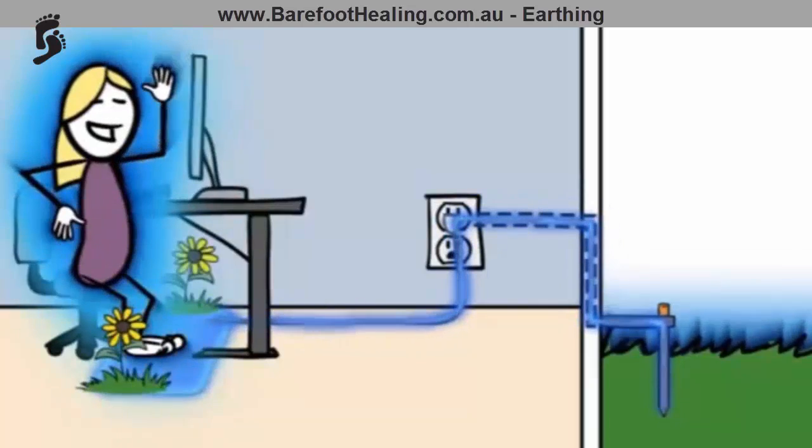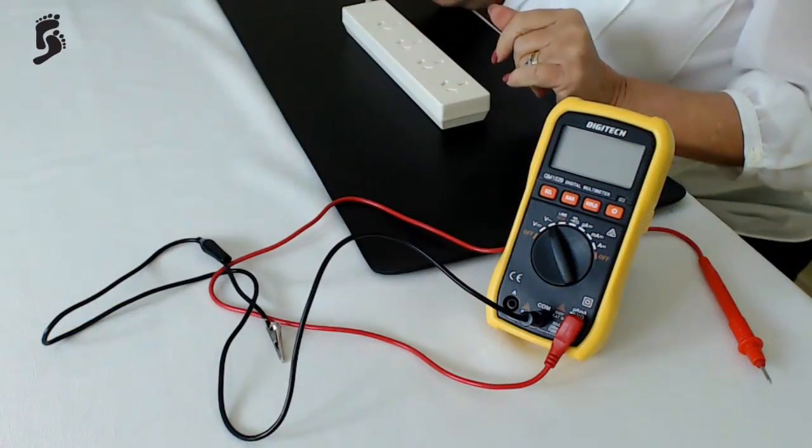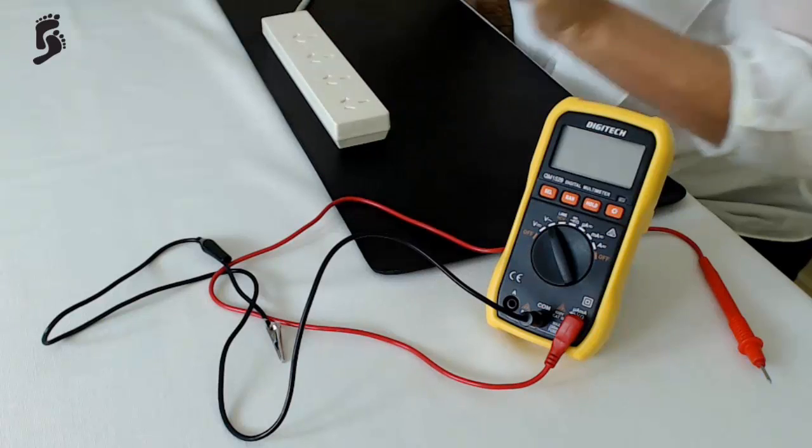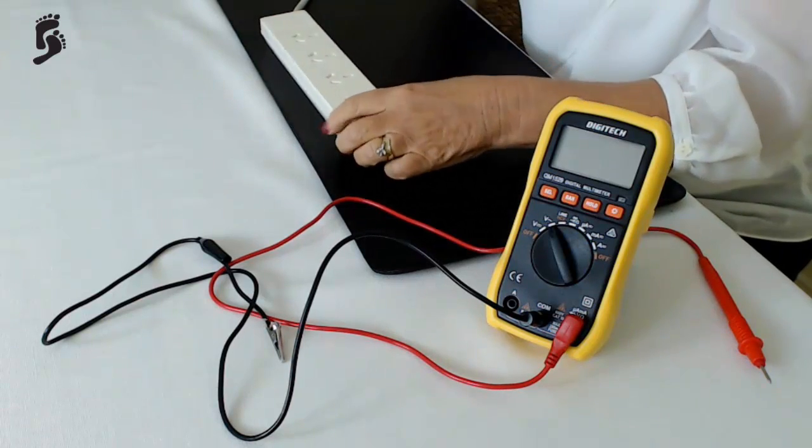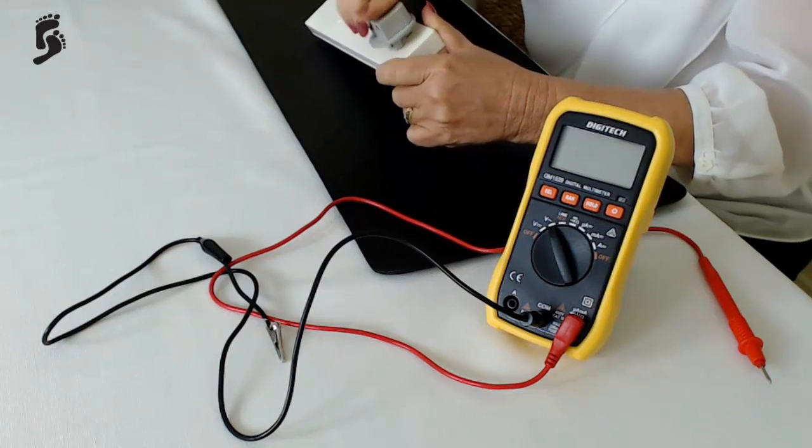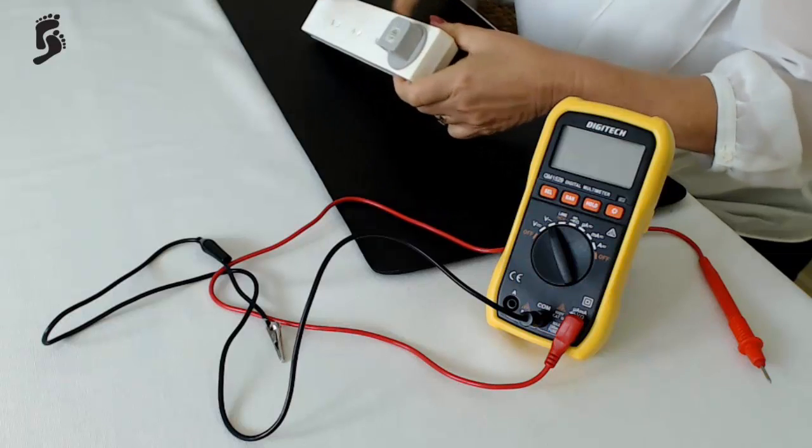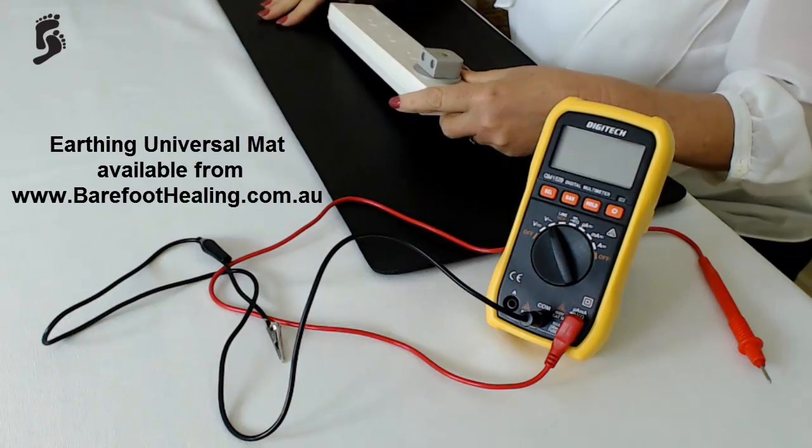So I'll take that out now and we can leave the power board on because it will be inducing a high electrical charge on me. Okay, so now you will need your Australian adapter plug that comes with all your earthing products and you need to place this in the power board as such and I'm going to use my universal mat for demonstration.